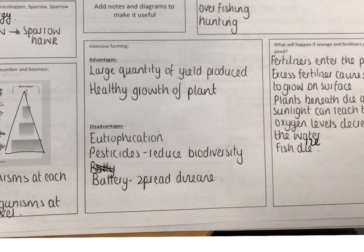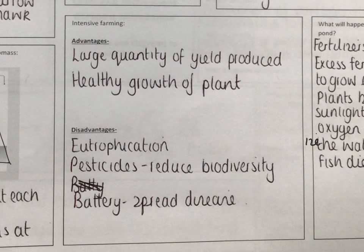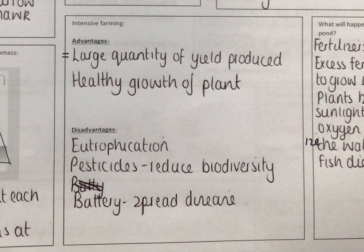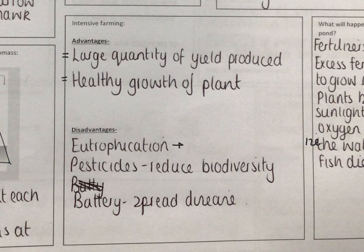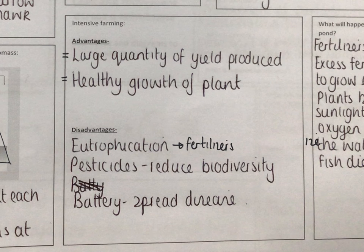Moving on to intensive farming. The advantages include a large quantity of yield produced — the amount of crop we produce will be high. By adding fertilizers, we get healthy growth of plants because they have enough nutrients to grow. The disadvantages include eutrophication from the use of fertilizers. Pesticides reduce biodiversity because they are sprayed on crops to kill different pests, reducing the number in a population. With battery farming — locking chickens in cages to get as many eggs as possible — disease can spread and cause harm to the chickens.